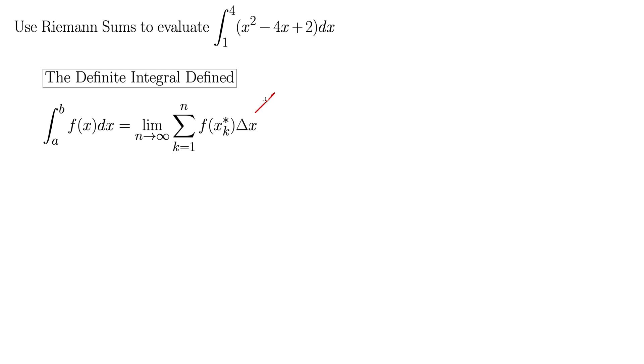For delta x, recall that delta x is always b minus a, the endpoints, over n. That will give us the width of these rectangles. This is essentially a rectangle here. Here's the height and here's the width. And we're adding up an infinite number of rectangles that we will let become infinitely thin. So in this case, our delta x is 4 minus 1 over n, which comes to 3 over n.